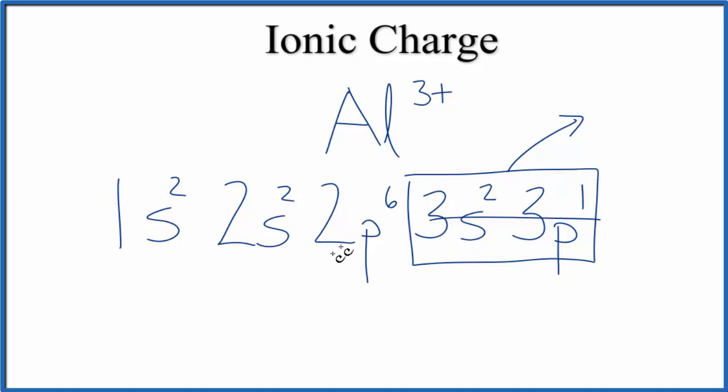Underneath it, since we've lost these, the second energy level, it has 8 valence electrons. So it's full, it has a full highest energy level. And this makes it have the same electron configuration as neon, which is a noble gas. This is very stable, and that's why it'll lose these 3 valence electrons to get this configuration.